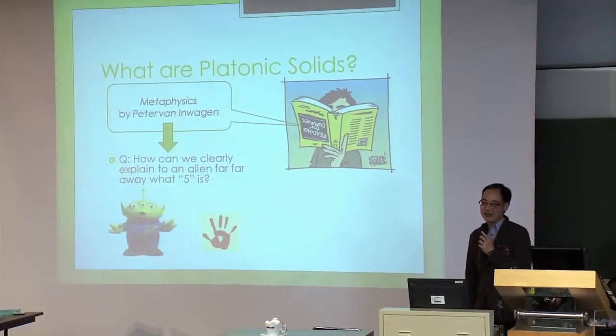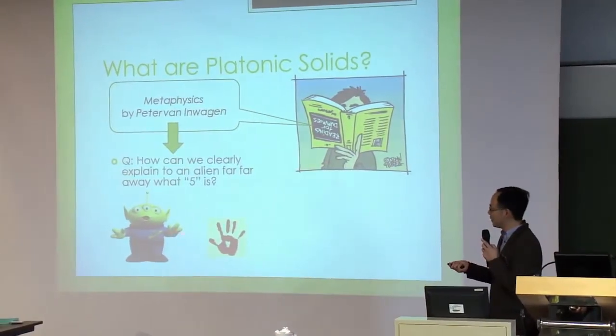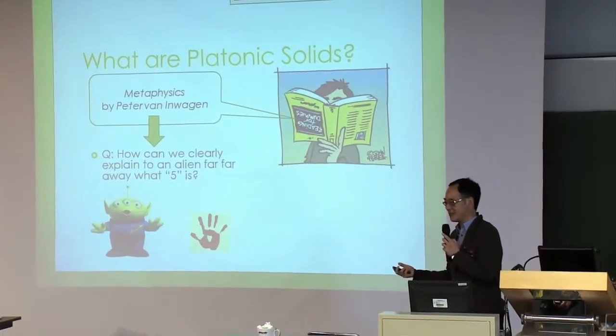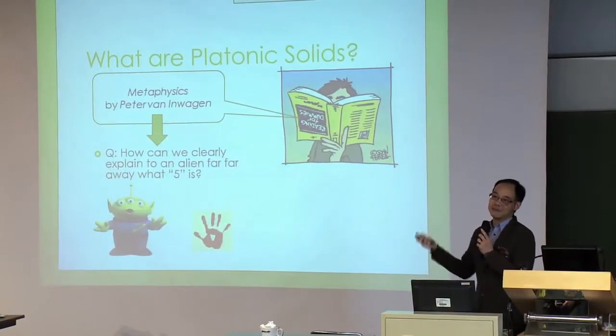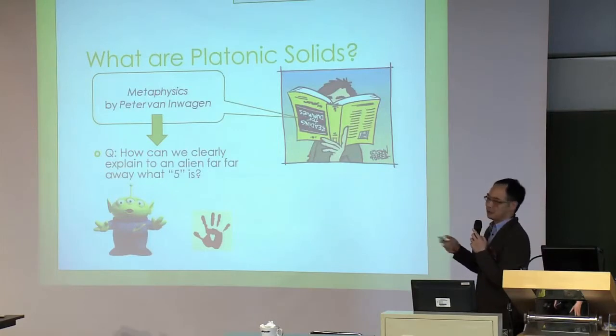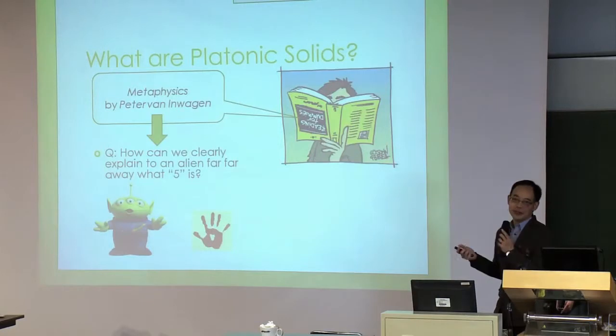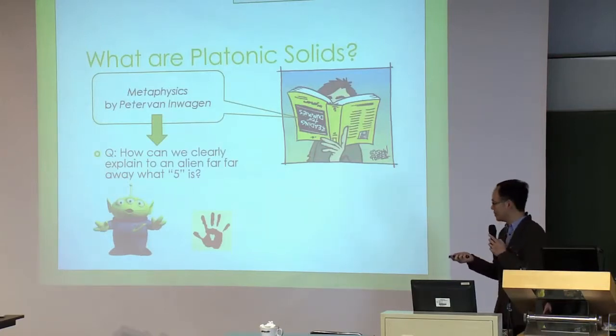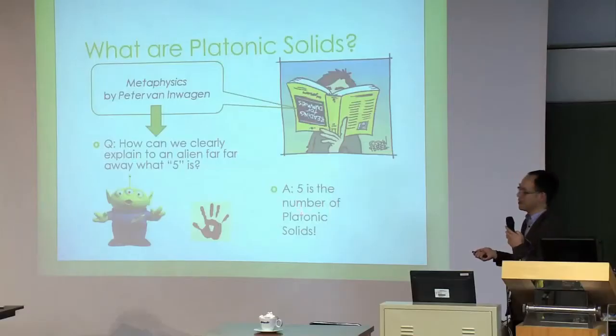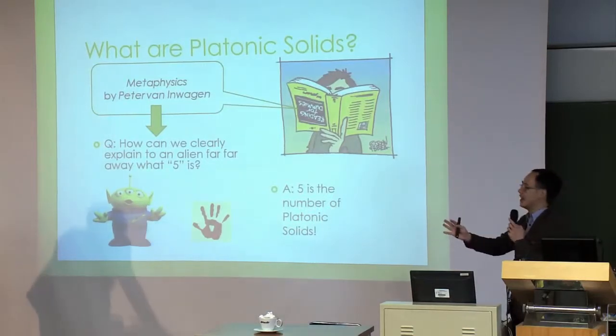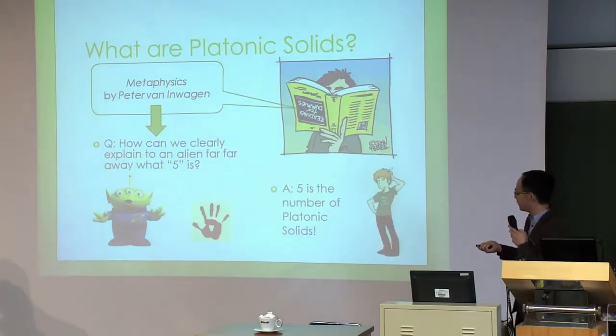Here is one of the questions I ran into in this book. Suppose you manage to talk to an alien very far away, on a completely different planet you have never seen before. At a certain point in your discussion, you want to explain to him what five is. How can you tell him? Presumably he doesn't have a palm or hand like us, so he cannot count his fingers. The book gives this answer: five is the number of platonic solids. You just tell the alien to count the number of platonic solids.